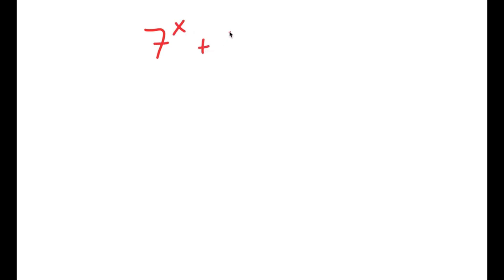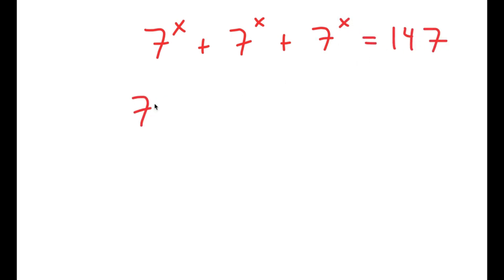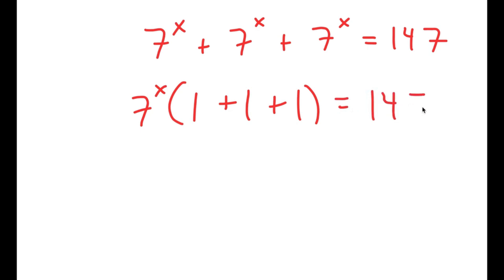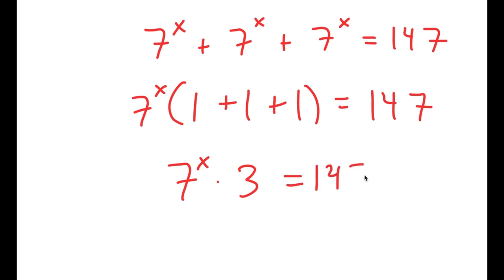In this video, I'm going to solve the equation 7 to the power of x, plus 7 to the power of x, plus 7 to the power of x, is equal to 147. To start, I'm going to factor out 7 to the power of x, so I get 7 to the power of x times 1 plus 1 plus 1, which is equal to 147. So 7 to the power of x times 3 is equal to 147.